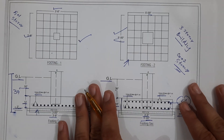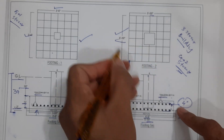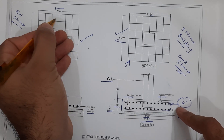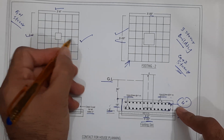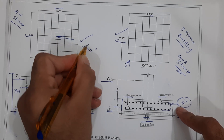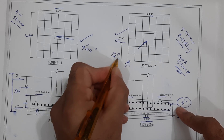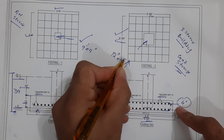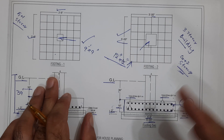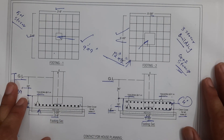We have two types of columns, so we have two types of footings. Footing one is five by five feet for a 12-inch by 12-inch column, and footing two is three feet six inches by three feet six inches for a nine-inch by nine-inch column. I will guide you about the RCC column in the next video.